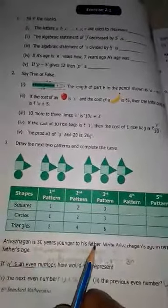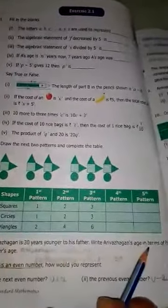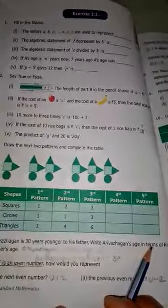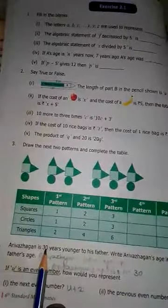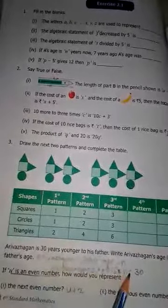Next, fourth sum. Arivalagan is 30 years younger to his father. Write Arivalagan's age in terms of his father's age. So write the algebraic statement. Arivalagan's father's age we don't know, that is N. The boy is younger to his father, so N minus 30. Use minus.